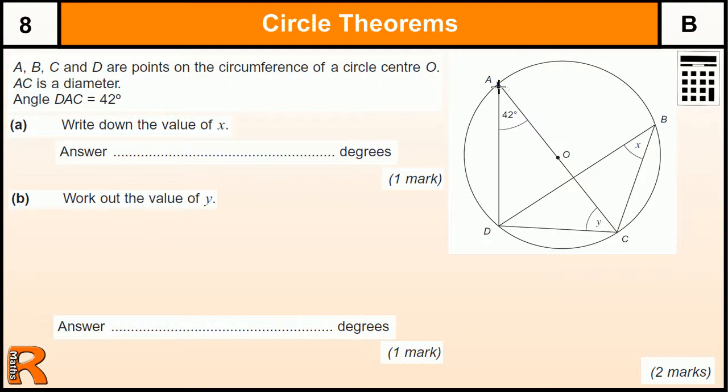The first one we're going to look at is when we have, actually from this, this chord here forms this angle and this angle in the circle. And we call that the bowtie rule because it looks a little bit like a bowtie and these two angles are the same. So the value of x is 42.